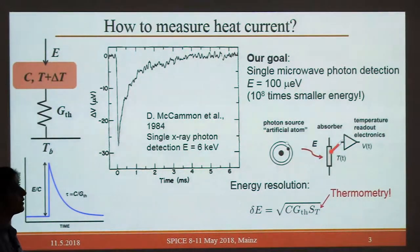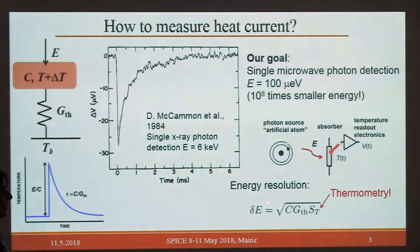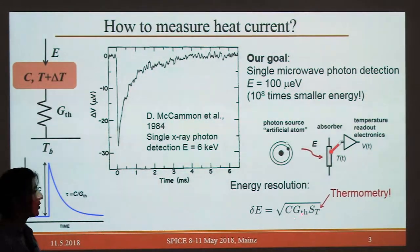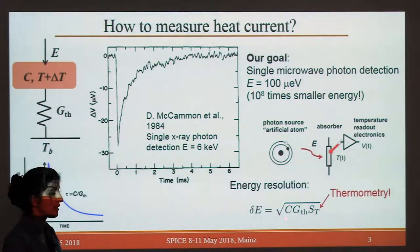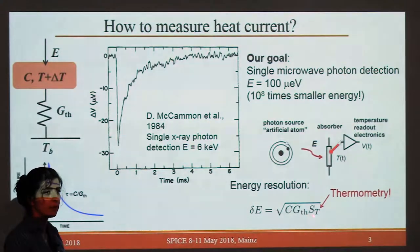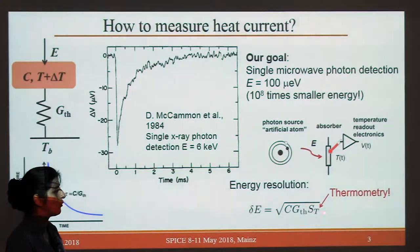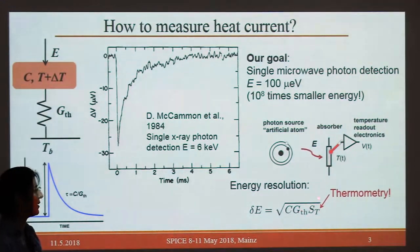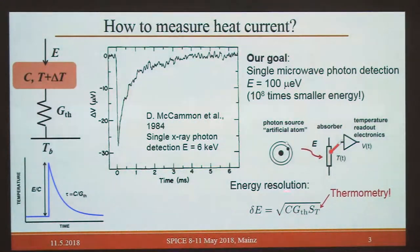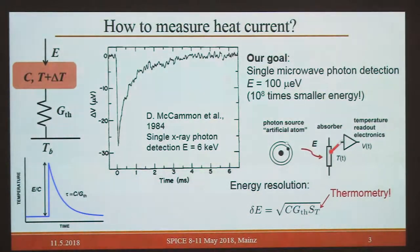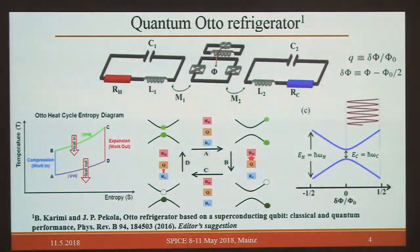This makes microwave photon detection very demanding. What we need for this energy resolution is: heat capacity as small as possible, thermal conductance to the phonon bath as weak as possible, and a thermometer that is very sensitive with low noise. These are all the prerequisites we need to detect microwave photons. I start with how to measure heat current by itself.